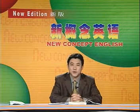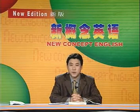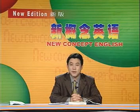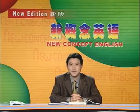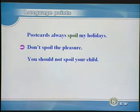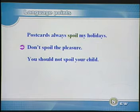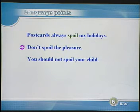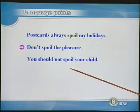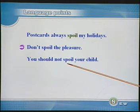Right, that's it for the questions and the answers. Now, let's look at the language points in the lesson. 好,问答我们就做到这儿。下面呢,我们来看看课文中的语言点。明信片总是使我的假期过得不得安宁。Spoil这个词意思是把什么事情搞糟糕、搅乱。我们来看看例句。Don't spoil the pleasure — 别扫兴。You should not spoil your child. 你不应该惯孩子。Spoil在这里的意思是惯坏、溺爱。